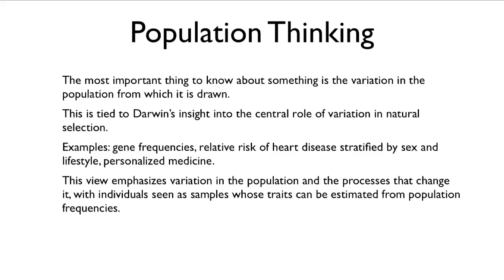In contrast, we have population thinking. For people used to typological thinking, thinking about variation actually requires a bit of a conceptual leap. Population thinking happens when the most important thing to know about something is the variation in the population from which it's drawn — what kind of a thing is it when we compare it to the other kinds of things it might be? That is directly tied to Darwin's insight into the central role of variation in natural selection. Natural selection runs on variation.